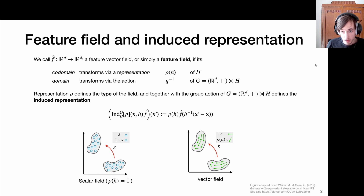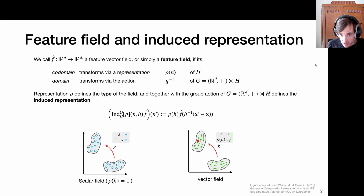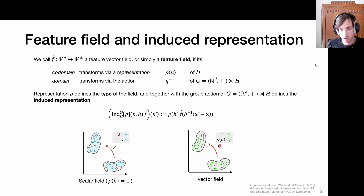When we talk about rototranslation — translations and rotations — the rototranslation part applies only to the domain: I translate and rotate this object to a new location. But the vectors are not translated; they're attached to these points. However, the direction of these vectors does rotate. So the part that transforms these vectors only comes from the rotation part, the subgroup H part.